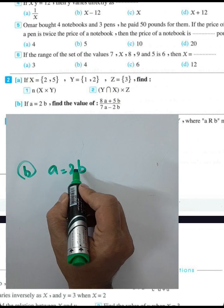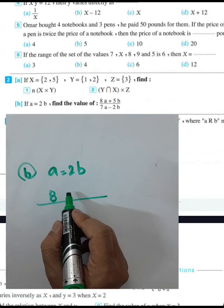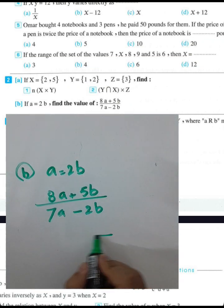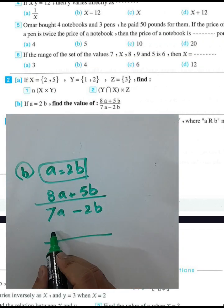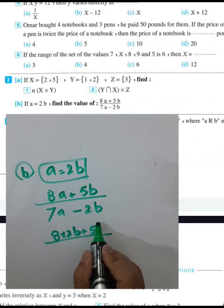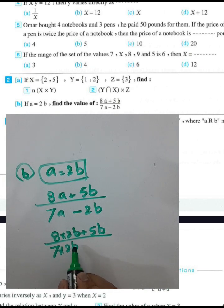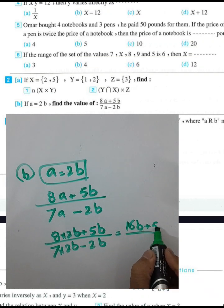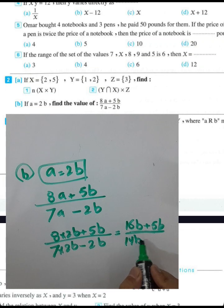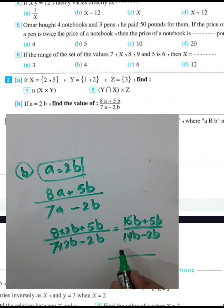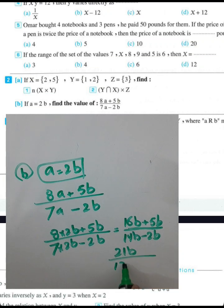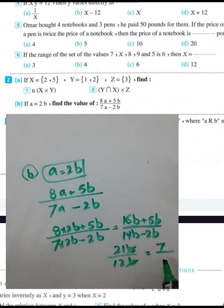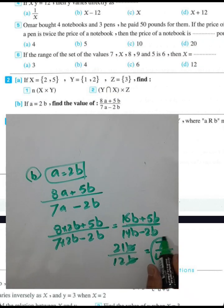Next example: If a equals 2p, find the value of (8a + 5p) / (7a - 2p). Substituting a = 2p: numerator = 8(2p) + 5p = 16p + 5p = 21p. Denominator = 7(2p) - 2p = 14p - 2p = 12p. So 21p/12p = 21/12. Simplifying by dividing by 3: 7/4.